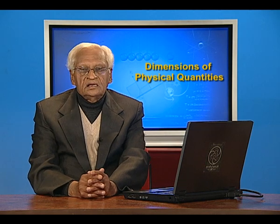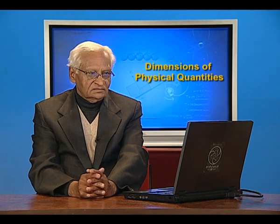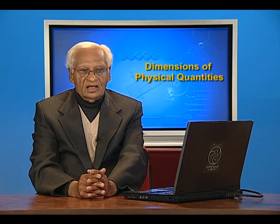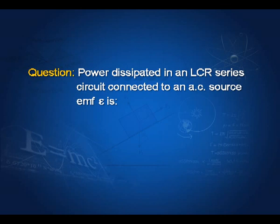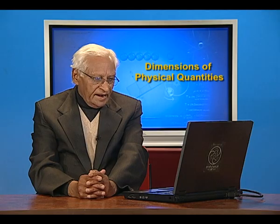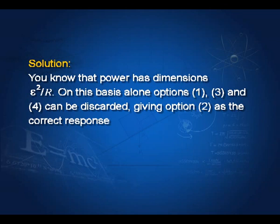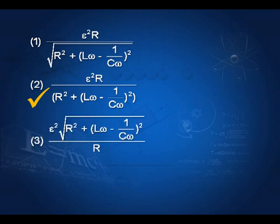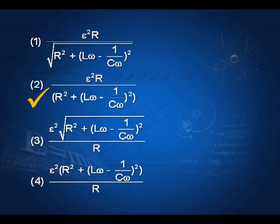So far we have learnt the importance of dimensions and dimensional analysis. Let us see how dimensional analysis can help in getting answers to questions. This question is taken from the medical entrance examination conducted by the CBSE. Power dissipated in an LCR circuit connected to an AC source of EMF E is given by four options. We know that power has dimensions of E squared by R. On this basis alone, options 1, 3, and 4 can be discarded, giving option 2 as the correct response, since options 1, 3, and 4 have wrong dimensions.